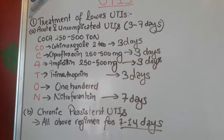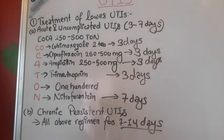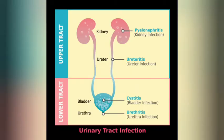Urinary tract infections are categorized into two levels: lower urinary tract infections and upper urinary tract infections. From the diagram, you can see that the female urethra is very short, which is why females get UTIs more frequently than males — because the male urethra is long. The picture explains everything about upper and lower urinary tract anatomy.